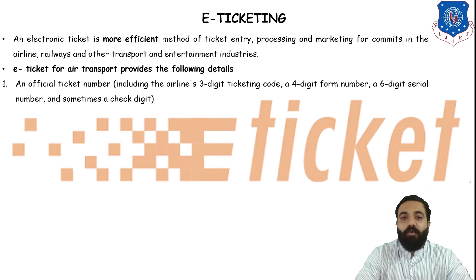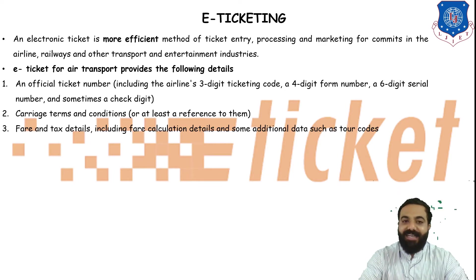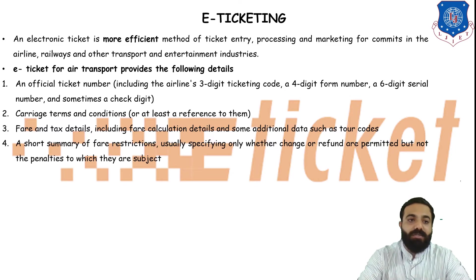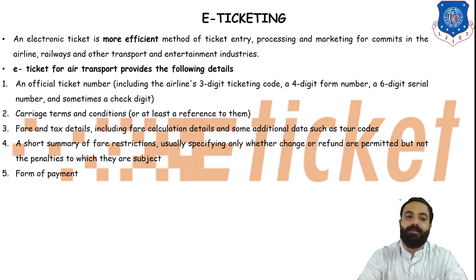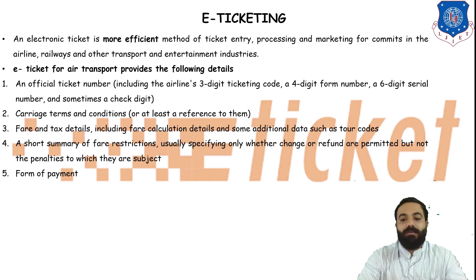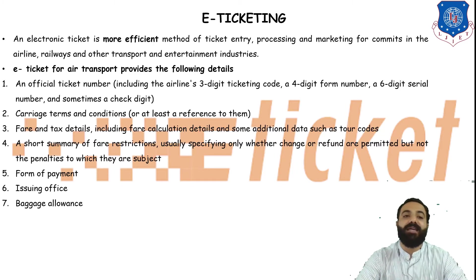E-tickets for air transport provide the following details: official ticket numbers, carriage terms and conditions, fare and tax details including fare calculations, additional data such as tour codes, a short summary, fare restrictions specifying whether changes or refunds are permitted, form of payment, issuing office details, and baggage allowances — a total of seven key items included in an air transport e-ticket.